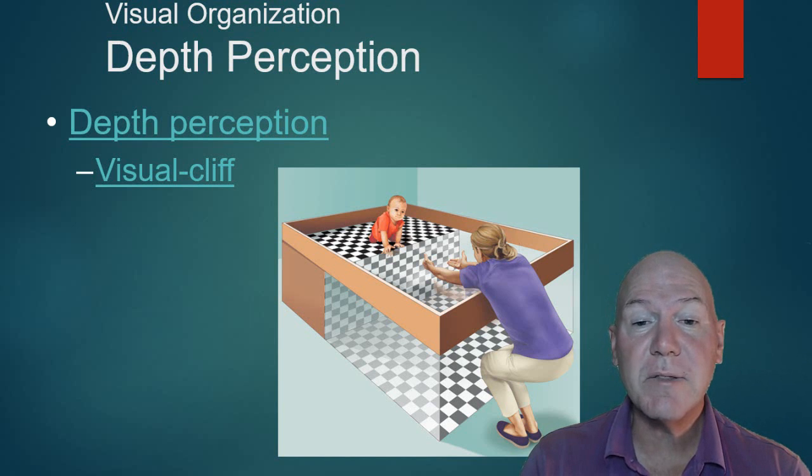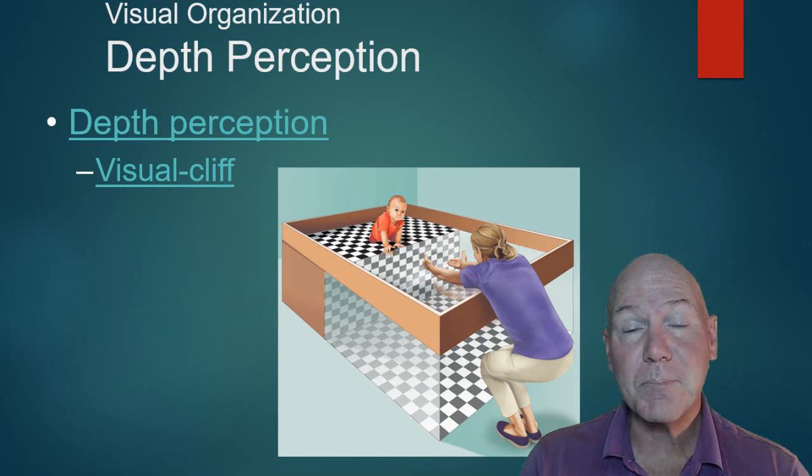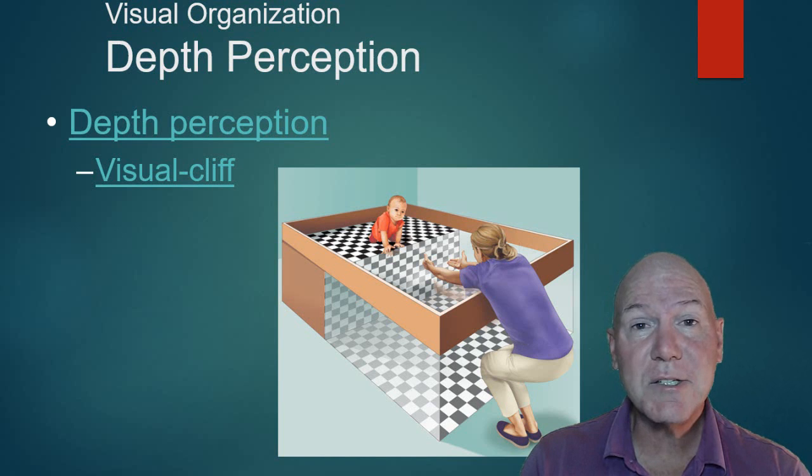But after they've been crawling for just a little bit, they develop this idea that they don't want to fall, so they won't cross it. The explanation is maturation—the genes kick in at about the same time they start moving around to give you depth perception. We found this when we tested on other animals as well.